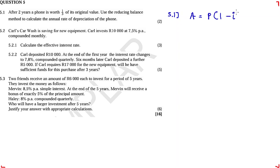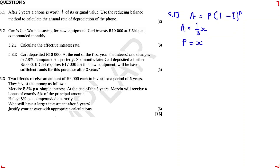The reduction balance method uses the formula: A = P(1 - i)^n. In two years time, the value depreciates to one third of its original price. I don't know what P is, so here's a trick — put x for P. Then the book value becomes one third of x, because the original price has depreciated by one third. n equals two, and i is what we want to calculate.